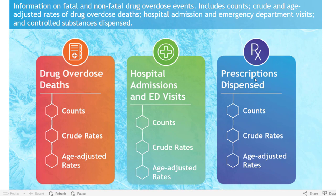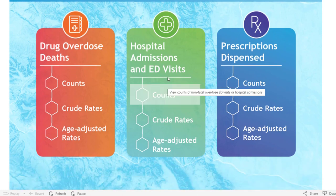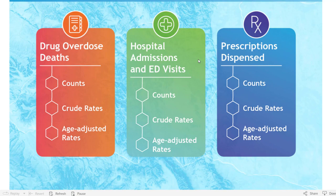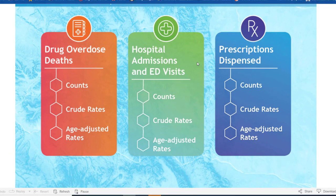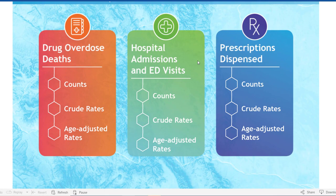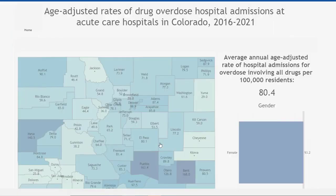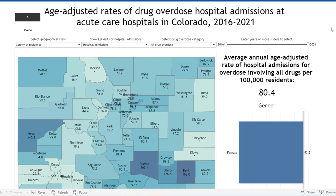Today I'm going to demonstrate from the middle green box showing hospitalization data. Each type of data presents three statistics — counts, crude rates, or age-adjusted rates — similar to what we saw on the vital statistics page. I'm clicking on age-adjusted rates for the hospitalization data, which opens a dashboard following a similar template to what we viewed previously looking at death data.